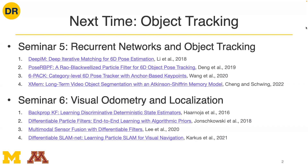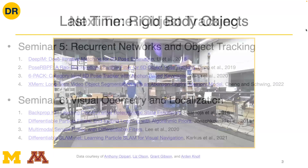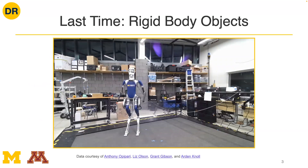These ideas extend beyond localizing robots in planar or autonomous vehicle scenes to multimodal data. The multimodal sensor fusion paper uses differentiable filters to fuse visual and tactile information. Differentiable SLAM-Net applies a similar approach to the SLAM algorithm — simultaneous localization and mapping — making it end-to-end differentiable so components previously handcrafted by robotics engineers can now be learned. That sets up what we're covering next week.